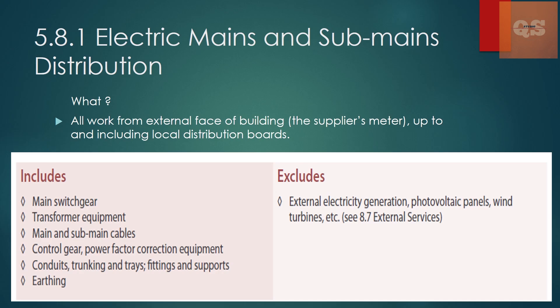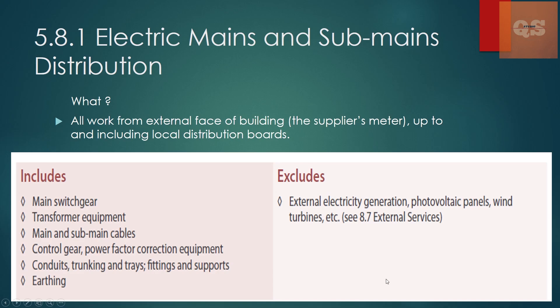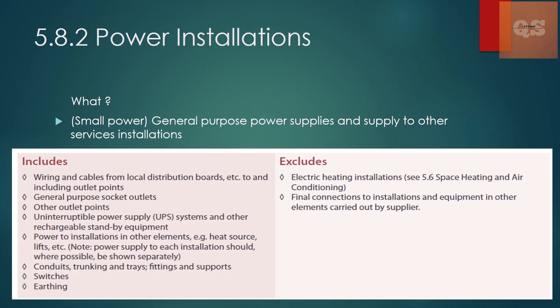Next is 5.8.2 — Power Installation, covering the small power system, general purpose power supplies, and supply to installations. This includes sockets, wiring and cables, outlet points, UPS systems, conduits, trunking, switches, and earthing for socket outlets. Exclusions are electrical heating installations and final construction connections carried out by suppliers. Spur outlets and switches usually come under the lighting section. This earthing is specifically for power-related work, separate from earthing for mains distribution which was mentioned in the previous section.